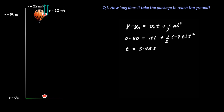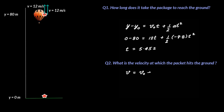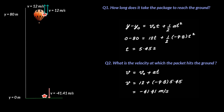The second question is: what is the velocity at which the packet hits the ground? Using V = V₀ + at, with V₀ = 12 meters per second, a = −9.8, and t = 5.45 seconds, we get V = 12 + (−9.8)(5.45) = −41.41 meters per second. The negative sign means the velocity vector is directed downward, which is correct when it is hitting the ground.